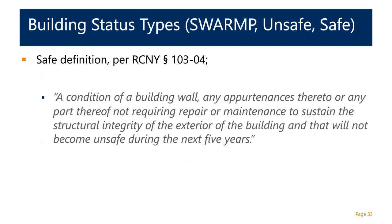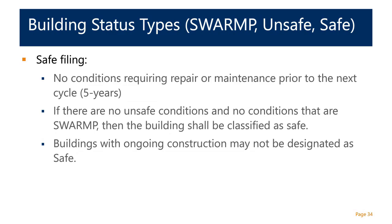Ideally, your building will be filed as safe — that being that the building appurtenances and all wall elements were observed to be intact, with no immediate repair recommendations and nothing anticipated to become unsafe over the next five years. It's important to note that buildings with any ongoing construction cannot be classified as safe. Any ongoing work would still be SWAMP or potentially unsafe until noted conditions are completed. Only when there are no unsafe and no SWAMP conditions can a building be fully classified as safe.